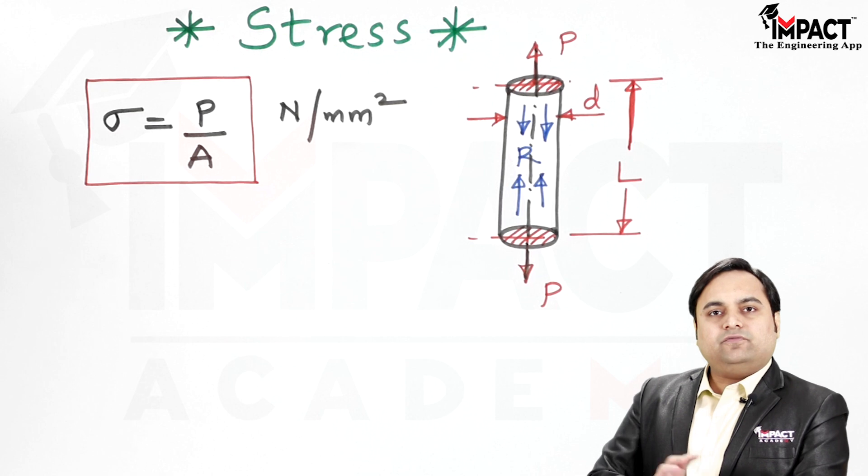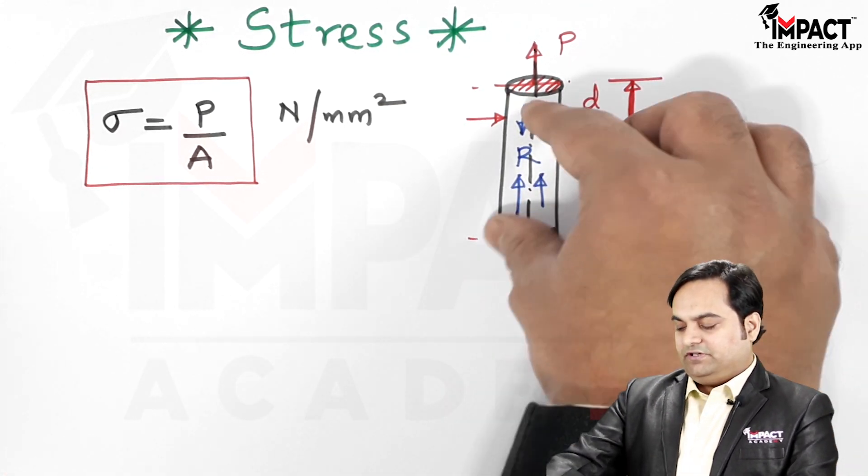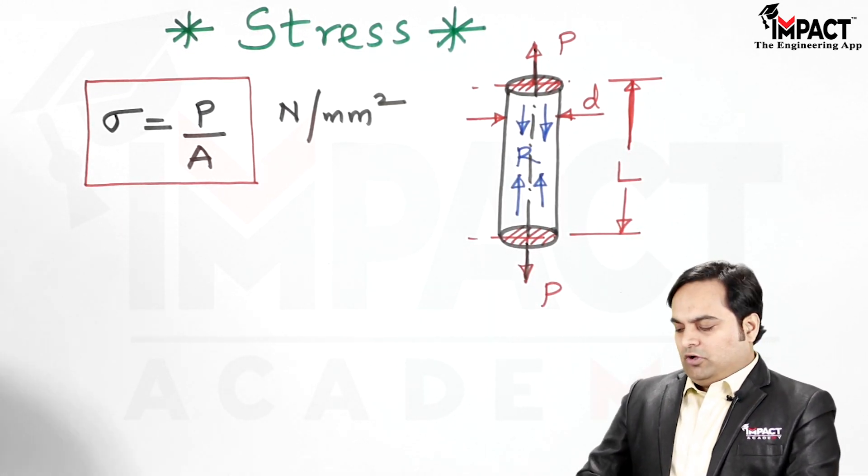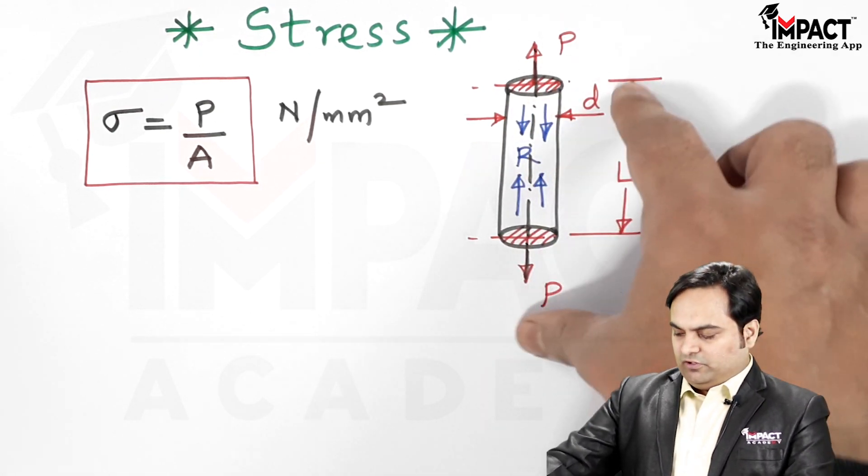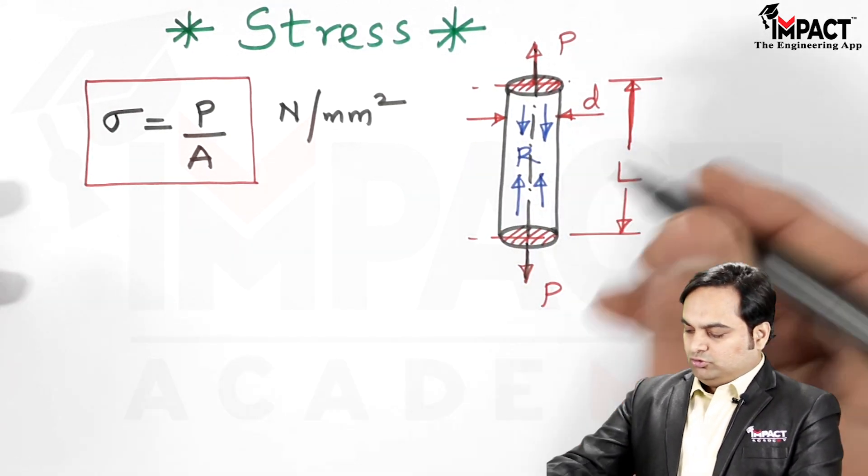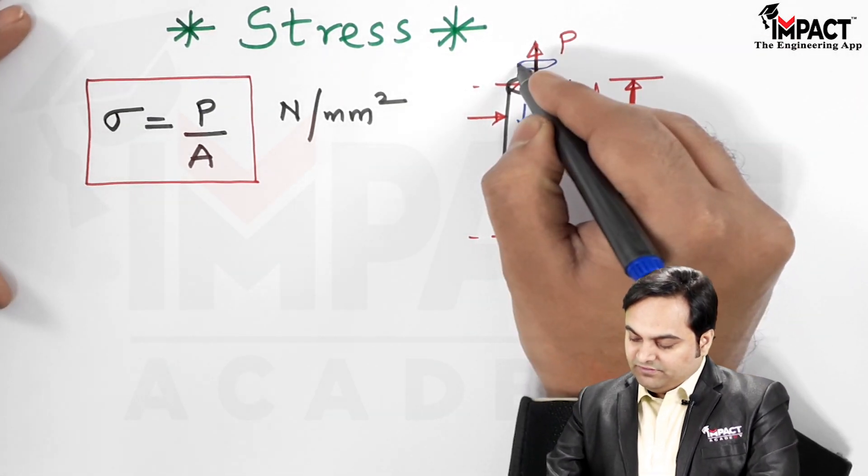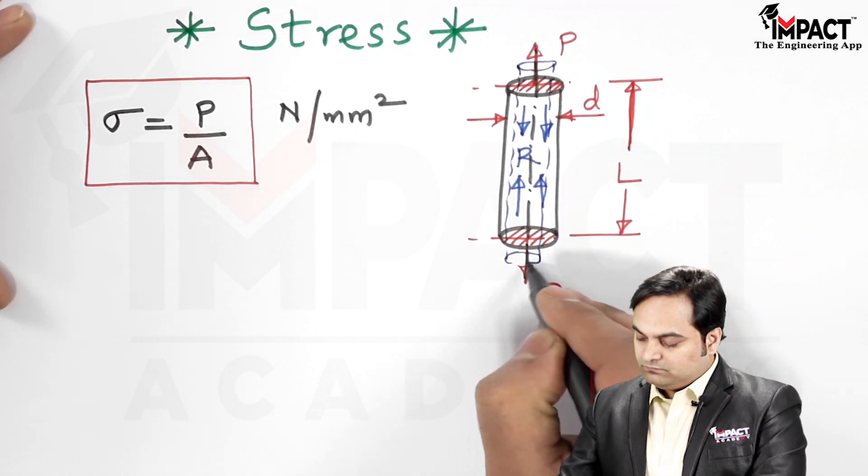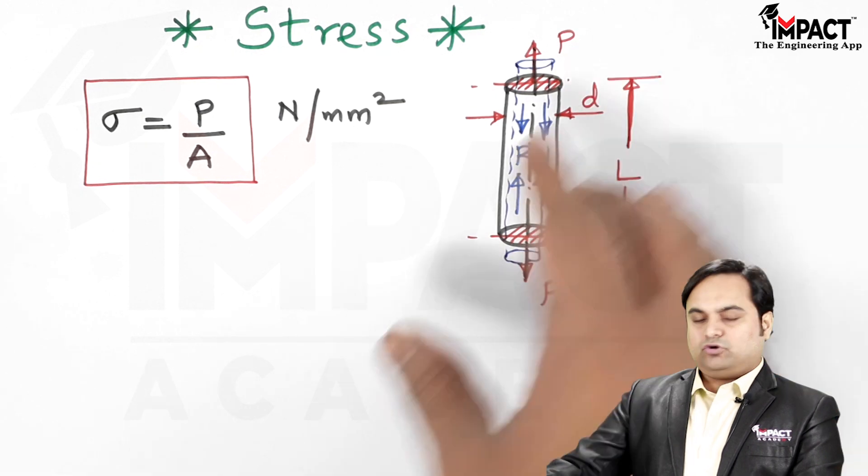We can say that stress is one of those properties which we cannot see externally. It is internal to the material, not an external property. When the load is applied, there will be some amount of elongation as in this case. The diameter will reduce whereas the length is going to get increased. Whatever the changes in dimension which we are seeing, that is called as the strain.